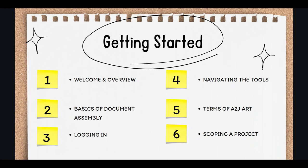Part 4 goes into the basics of the tool itself — how do you navigate around A2J Author? Part 5 covers the terms of A2J Author. I'll define the terms that I'll be using in the course and also those that are parlance in the form automation community.